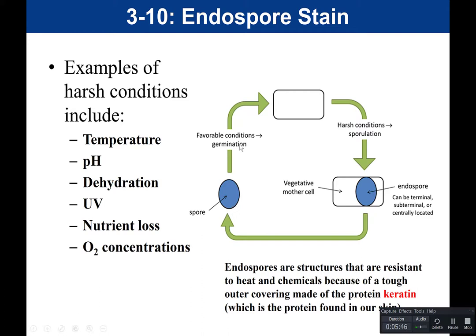However, if that spore encounters favorable conditions again — maybe food is available, the temperature is permissive, the oxygen concentrations are permissive — it's going to undergo a process called germination. It's going to germinate and go back to being a vegetative mother cell that is metabolically active. This cycle can occur over and over again: sporulation to form the spore, and then when conditions become favorable, germination back to being metabolically active.